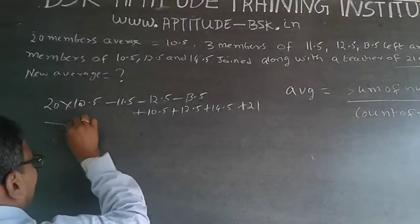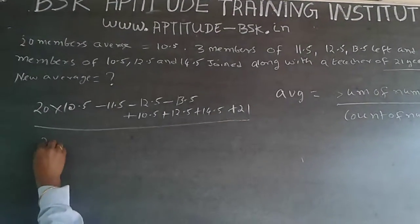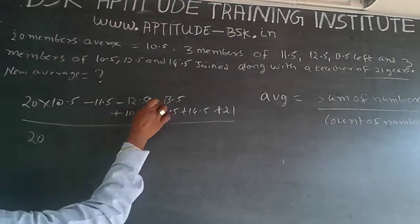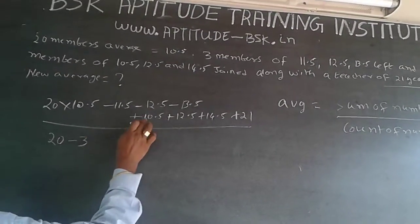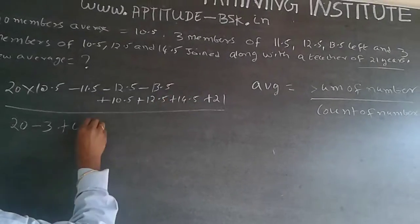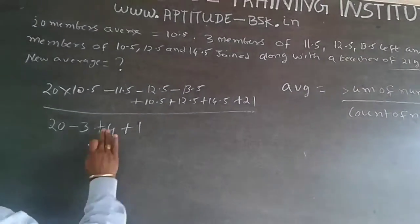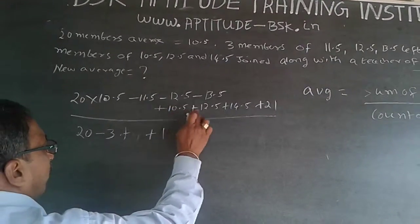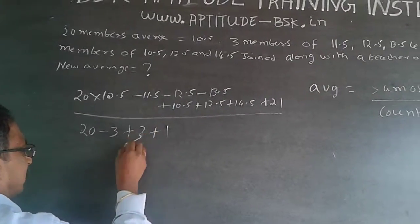Now divide all this. So 20 members are already there, 3 members are gone, minus 3. Three members are coming, plus 3, plus a teacher is also coming, plus 1. So it will be plus 3, plus 1.